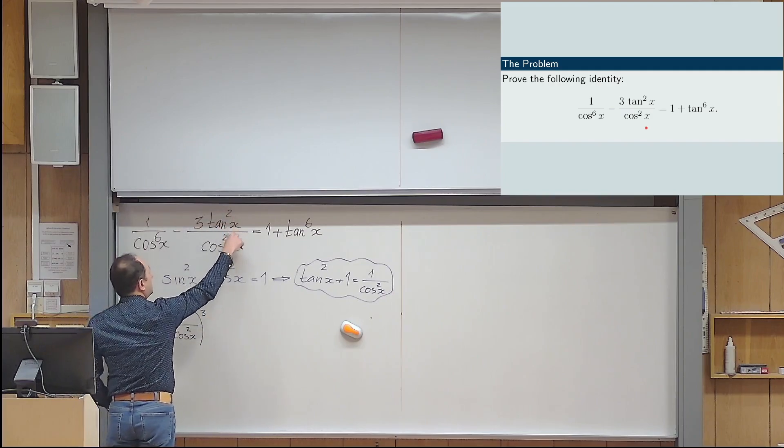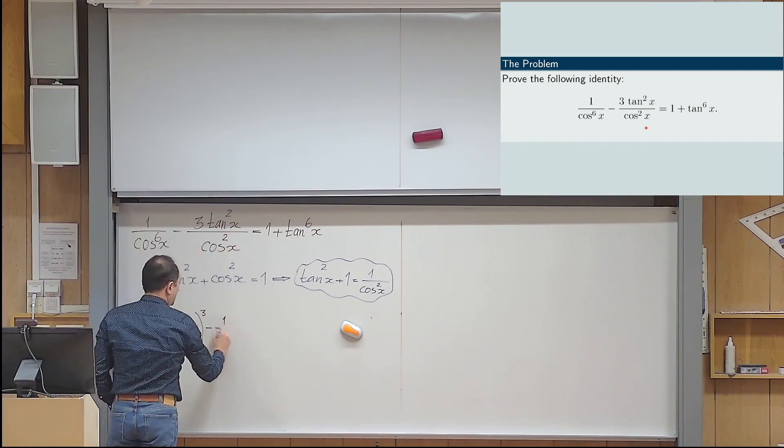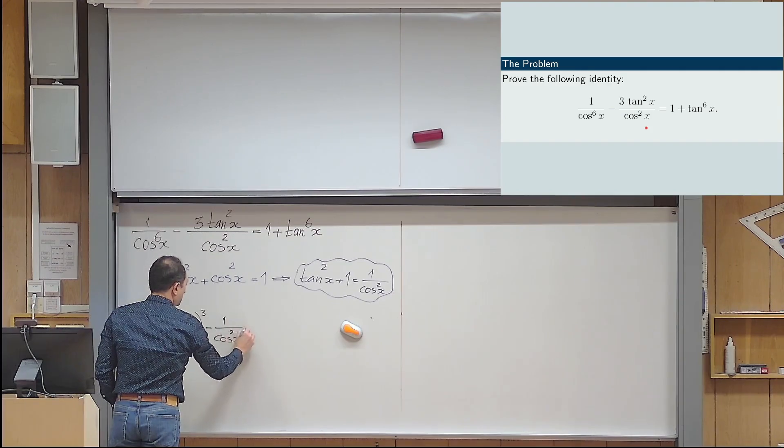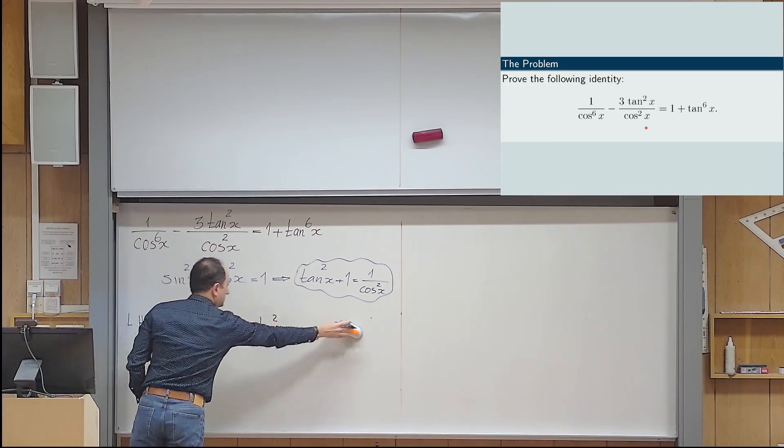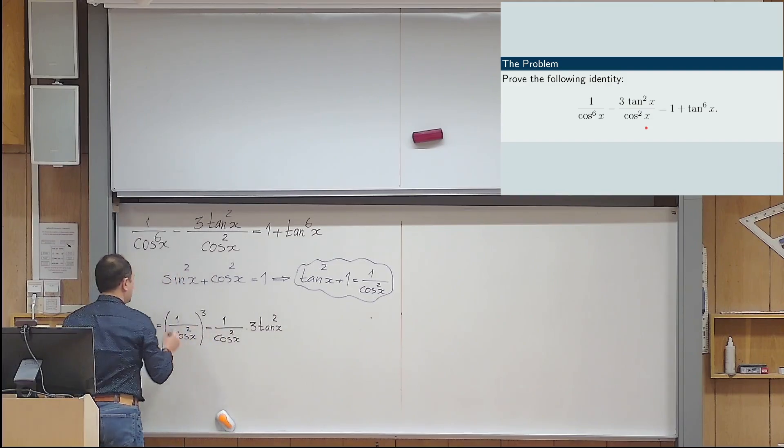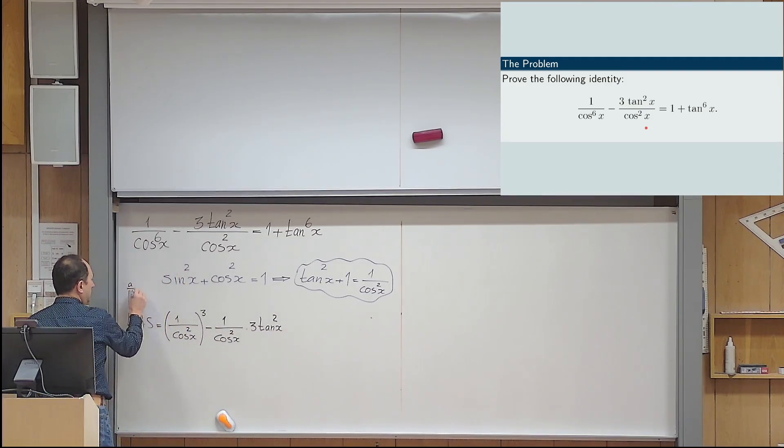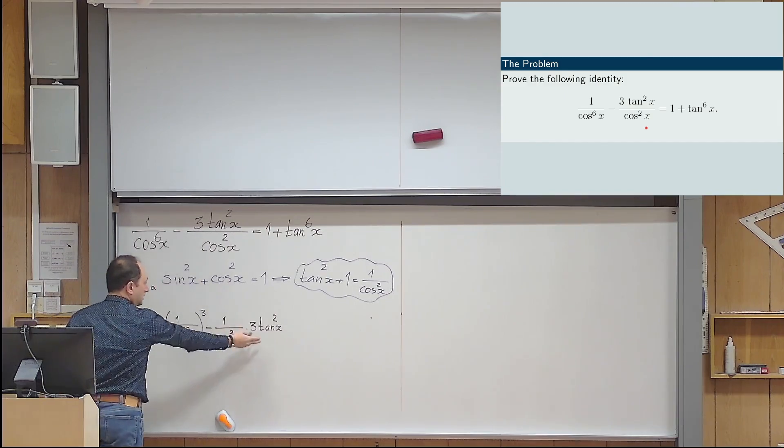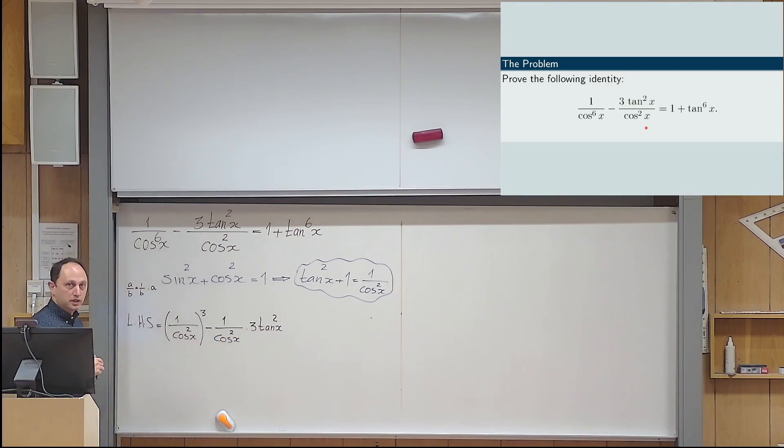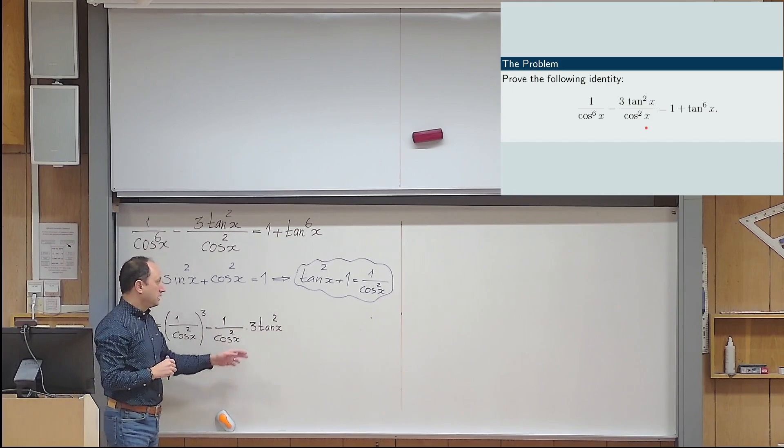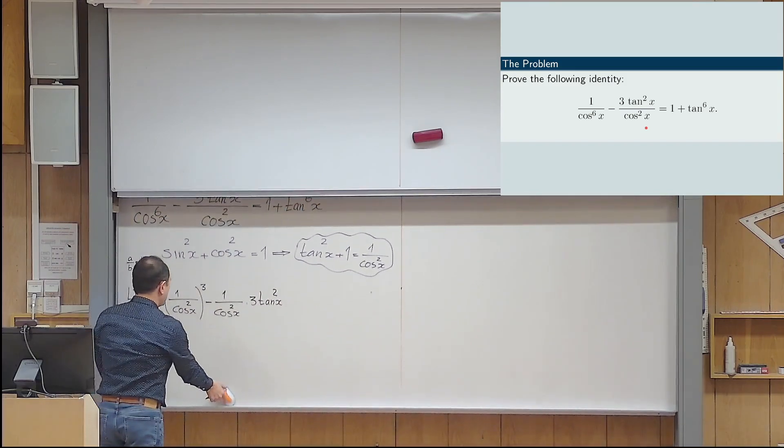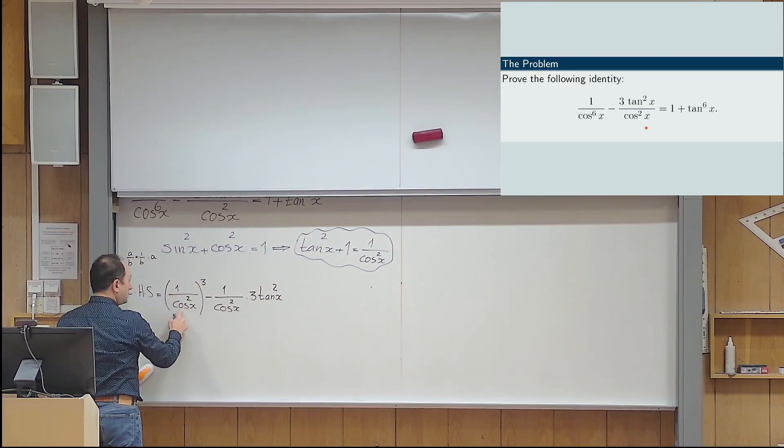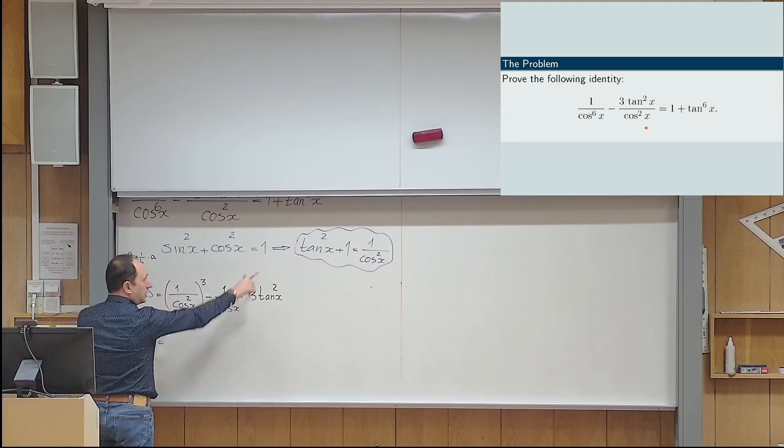Okay, good. And instead of writing this in this form, I would write it as minus 1 over cosine x squared multiplied by 3 tan x squared. Yes? That's also the same because if I have a fraction a over b, I can write it as 1 over b times a. So, I just rewrote it in this form. Again, the motivation is clear because 1 over cosine x squared using this formula can be written only in terms of tangent. Okay. So, I will do the same thing now.